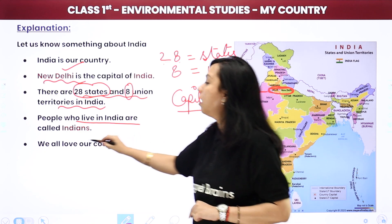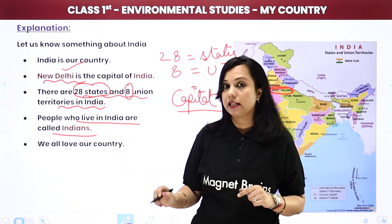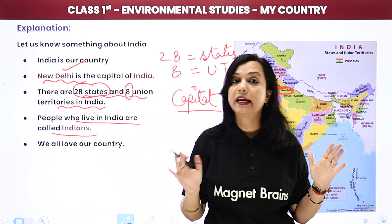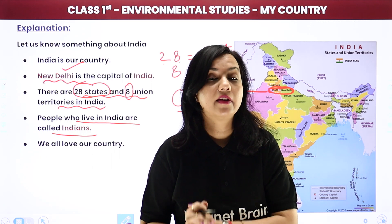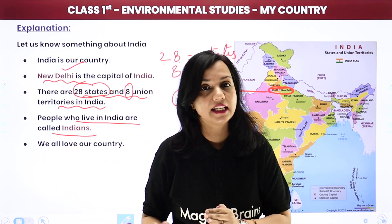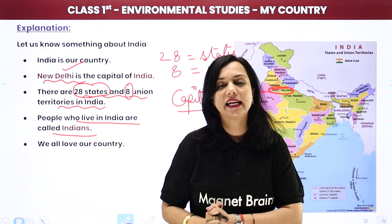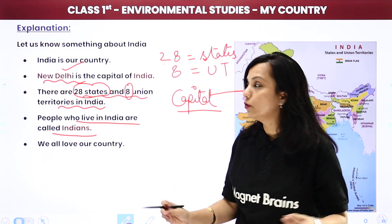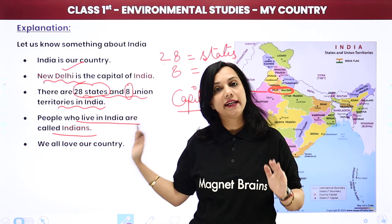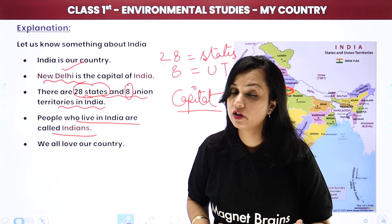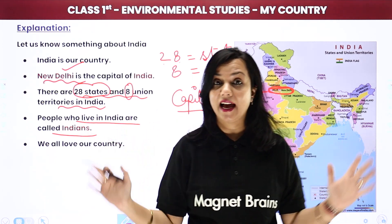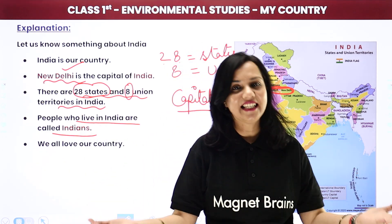People who live in India are called Indians. Hum sab jo log India mein rahte hain, jitne bhi logon ne India mein janam liya hai children, woh sab kya ban jaate hain - Indians. Everyone who lives in India is known as Indians. Don't get confused - New Delhi is the capital of our country India, there are 28 states and 8 union territories, aur jitne bhi log hain, hum sab - we all are known as Indians because we live in India.